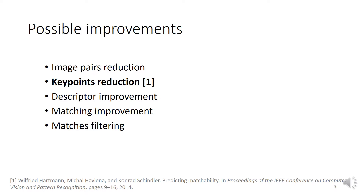This can be handled by reducing image pairs, improving descriptors and matching, and filtering matches. In our case, we reduced the keypoints, like the similar work of Hartman et al. 2014, using a binary random forest classifier. However, here we used simple keypoint properties as training features, instead of SIFT descriptor elements. The Hartman et al. method was used as a comparison method for the proposed one.